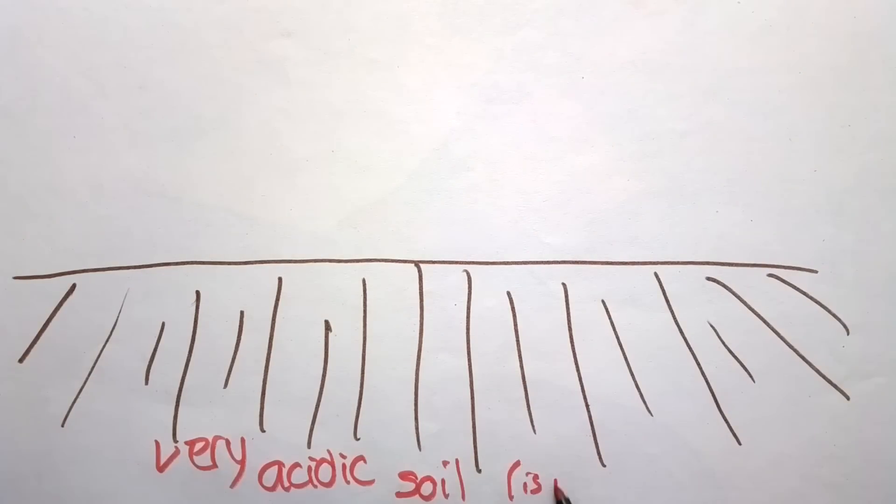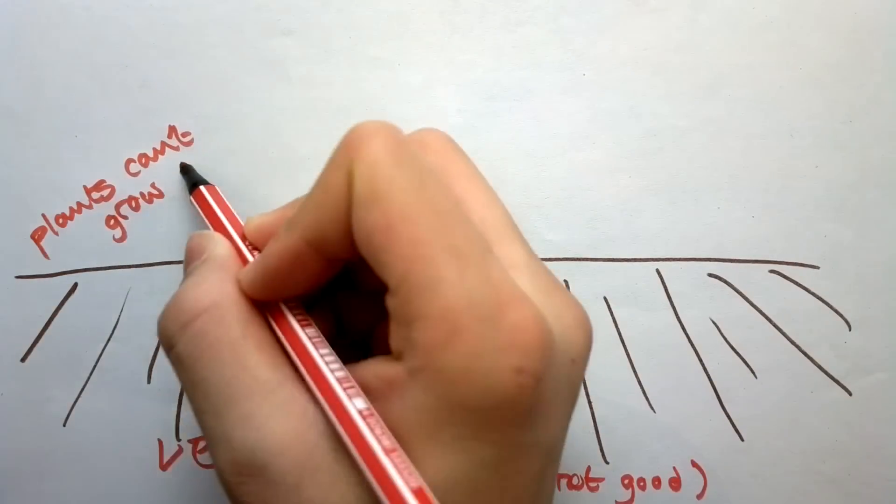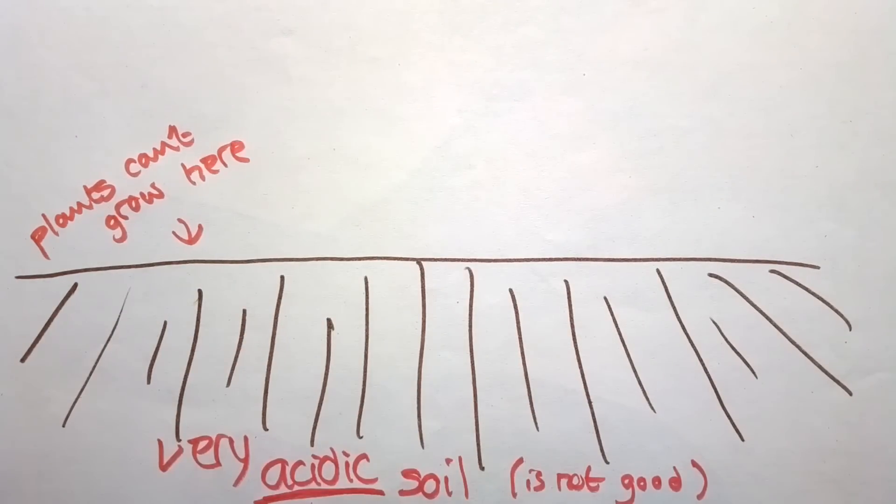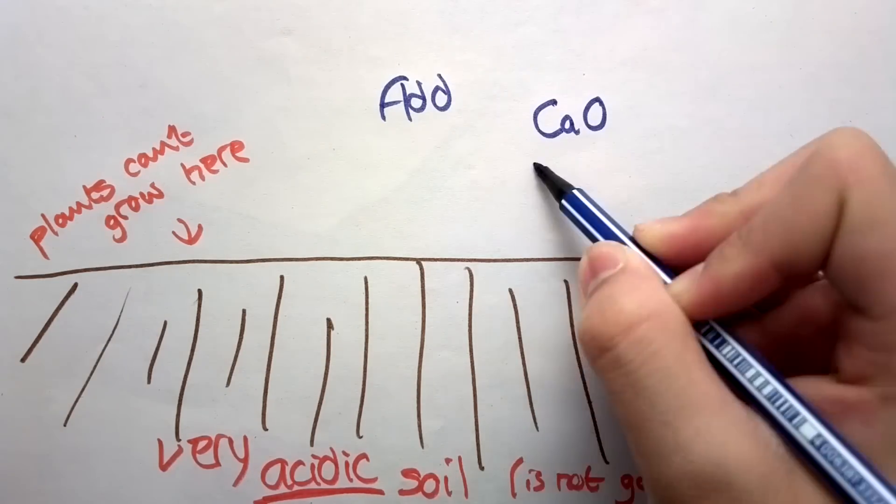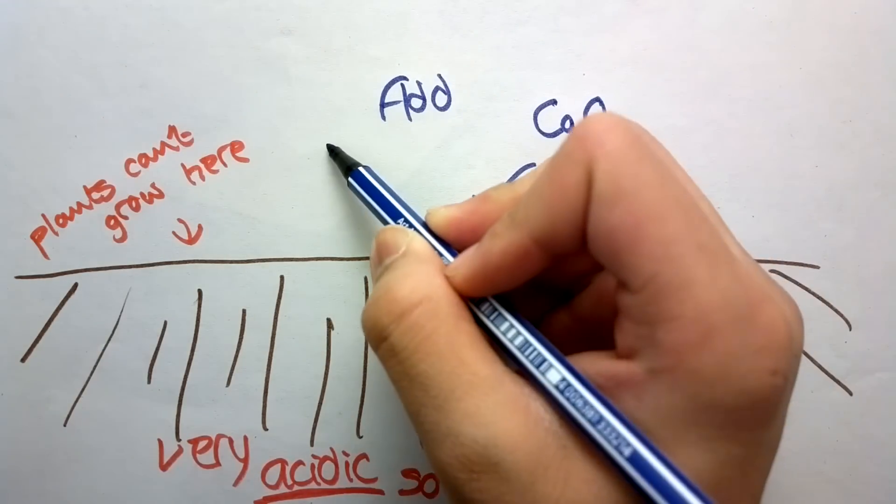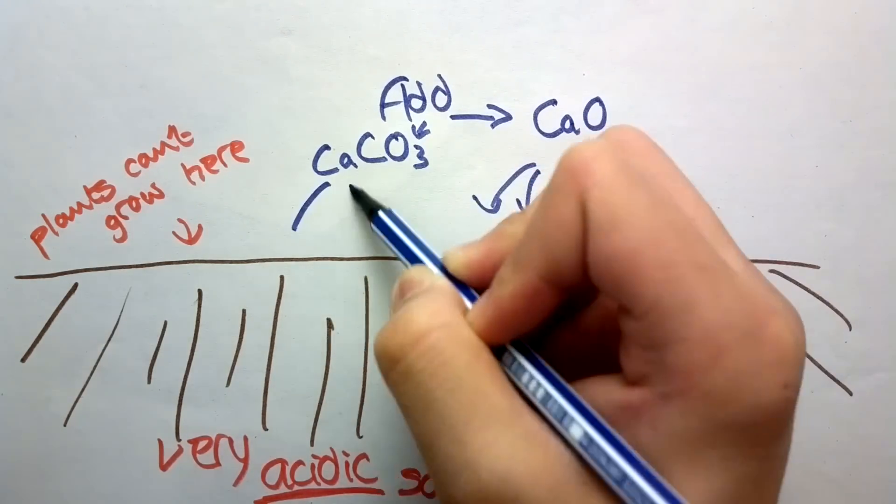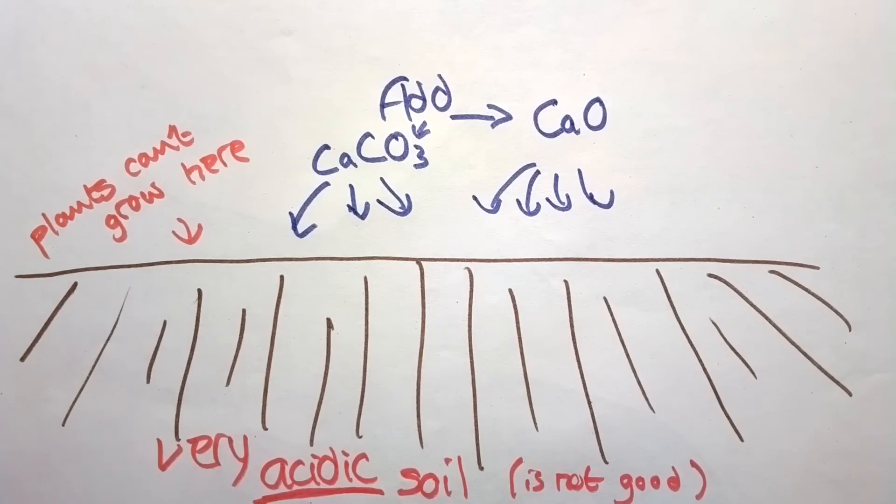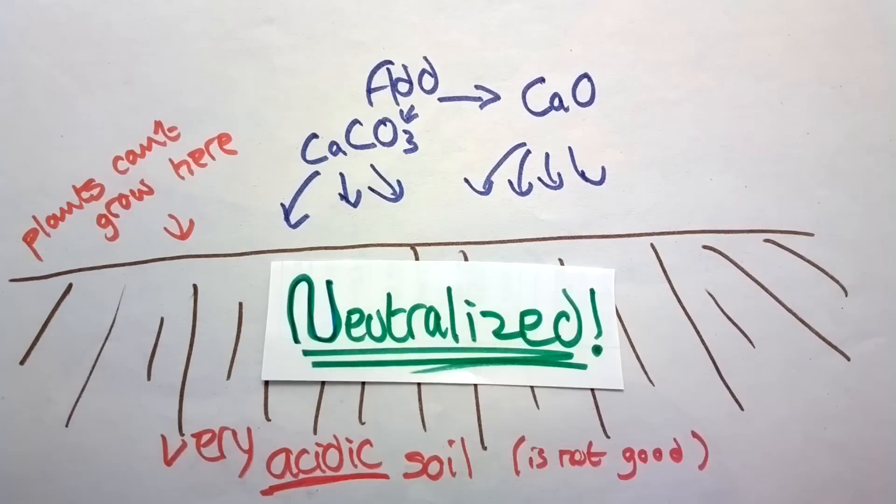Other types of neutralizations in real life can be when plants don't grow well in acidic soil. Lime fertilizers, such as powdered lime, or limestone, or ashes of burnt wood are added to the soil to neutralize its acidity.